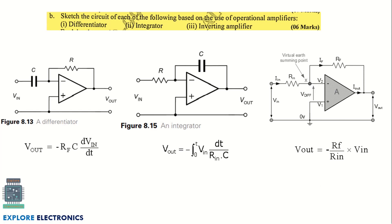The second question asks you to sketch the circuit for each of the following using op-amp amplifiers — a differentiator, integrator, and inverting amplifier. You need to write the circuit correctly and then write the expression for the output V-naught or V-out. No need to explain how the output is derived; just the circuit and the expression is sufficient for this question.